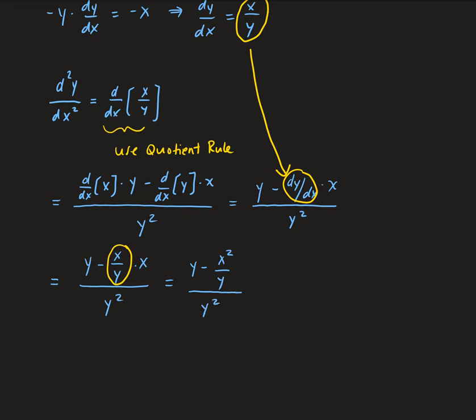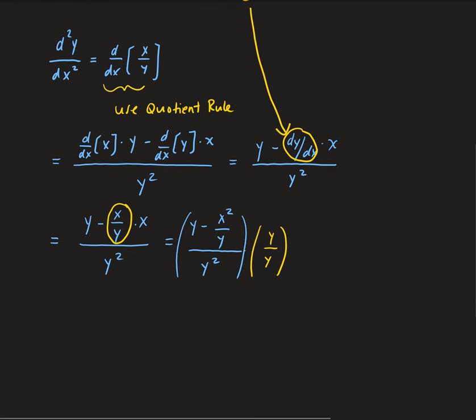We can simplify by multiplying the top and bottom by y — this is an algebraic technique to clear the compound fraction, sometimes called a complex fraction. Doing so gives us y squared minus x squared in the numerator, divided by y cubed.